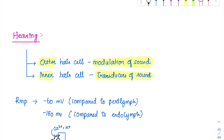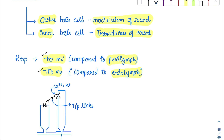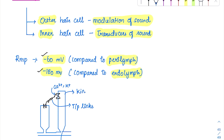The RMP of these hair cells is at minus 60 mV compared to perilymph, and minus 150 mV compared to endolymph. There are specialized channels called tip links. When hearing occurs, the hair cells move toward the tallest one — the kinocilium — causing a stretch of the tip link. This mechanical stretch opens the channels, allowing entry of calcium and potassium ions.